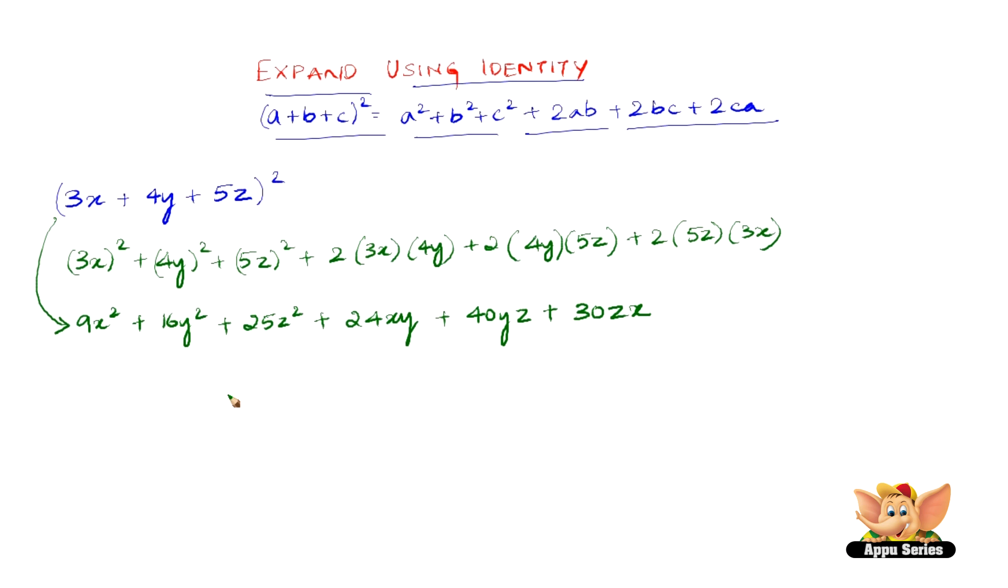Let us consider another one which is slightly different. That is 4x minus 2y minus 3z the whole square. It is slightly different because of the signs. We have minus 2y and minus 3z. So let us expand this in the same way as the above but just that we need to include the signs of the other terms.